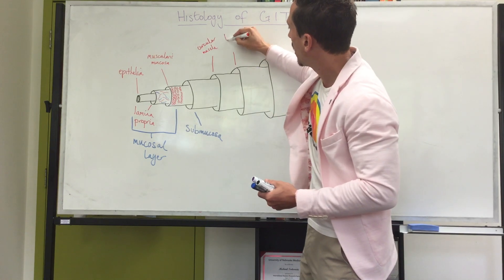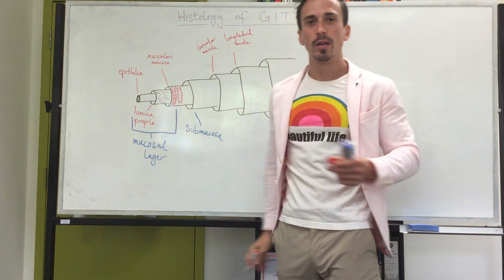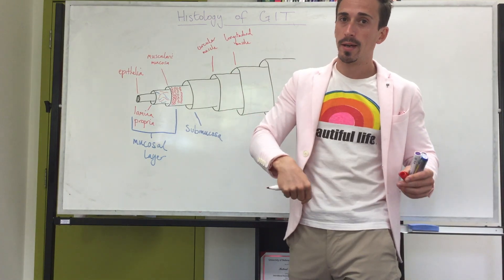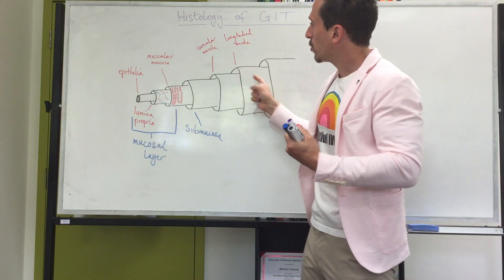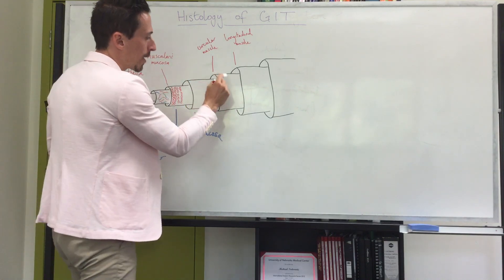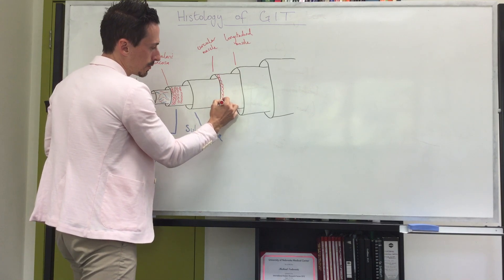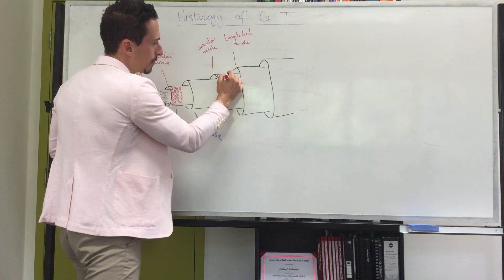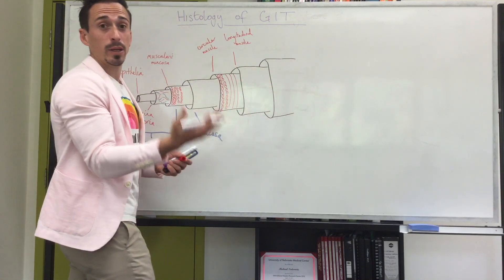The next layers are two muscle layers: a circular muscle layer and then a longitudinal muscle layer. Both are smooth muscle — which makes sense for the alimentary canal since we contract it involuntarily. The circular muscle cells are arranged in a circular pattern around the tube, while the longitudinal layer runs along the length of the tube.